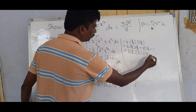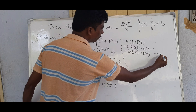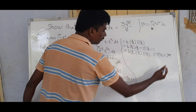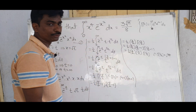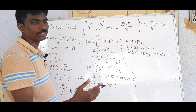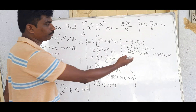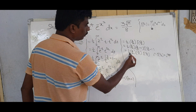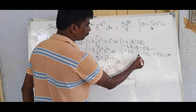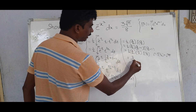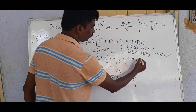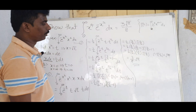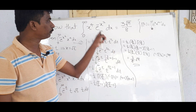We know Γ(1/2) = √π — we have a video on Beta-Gamma relations for this. Substituting: (1/2) · (3/2) · (1/2) · √π = (3/8) · √π. This is the final answer.